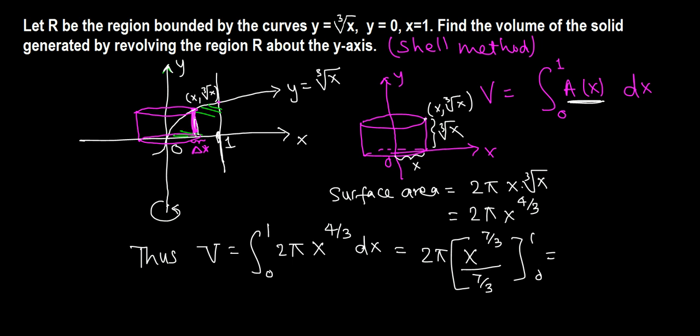Plug in 1 for x and plug in 0 for x. At 0, everything becomes 0. 2π times 3/7 (flipping 7/3 to divide) gives us 6/7 times π.